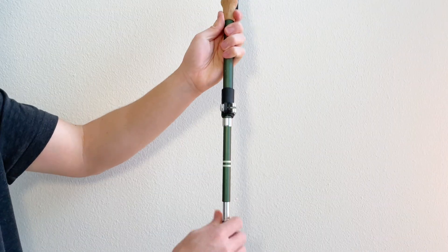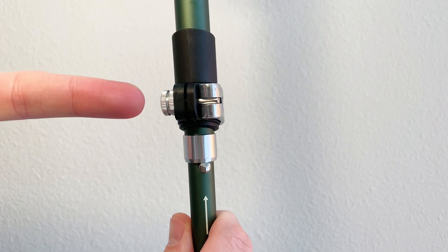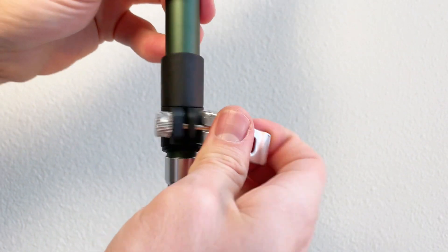To set them up, ensure a secure connection between the upper and lower sections of the pole. Extend the pole until the metal button pops out, and then tighten the screw cap until it aligns with the end of the screw.